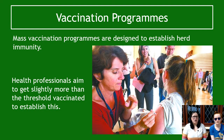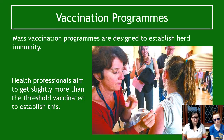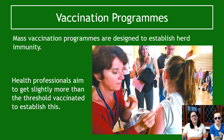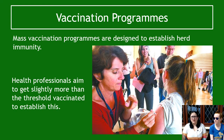Vaccination programs are medical initiatives to get large numbers of people vaccinated. They're designed to establish herd immunity, which was talked about in the previous video. Health professionals, government officials, and people who understand epidemiology aim to get slightly more than the herd immunity threshold vaccinated in order to confidently establish herd immunity. So if you need exactly 82% of the population vaccinated, you're going to want to aim for slightly more than that.